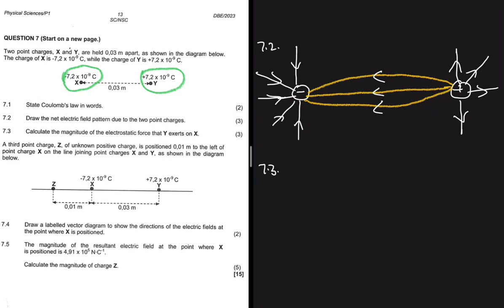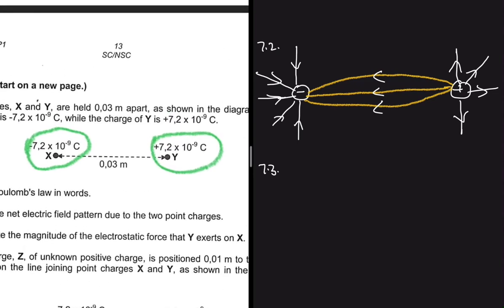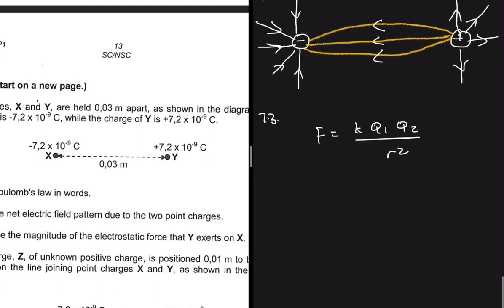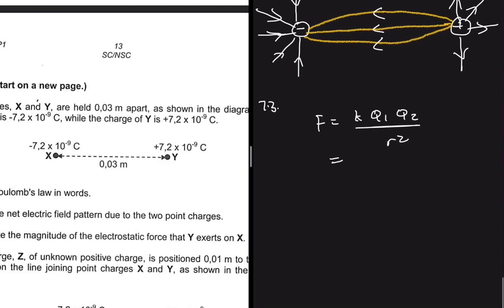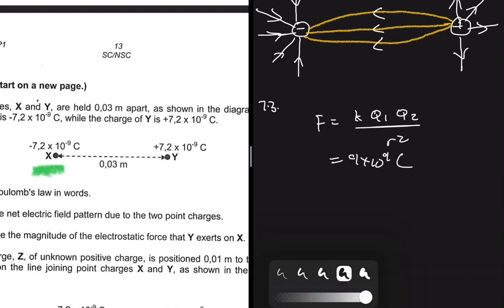For 7.3, we need to calculate the magnitude of the electrostatic force that y exerts on x. So we have y and x right there. The formula is F = kq₁q₂ / r². The value of k is a constant: 9 × 10⁹. For q₁, we take x — when you substitute, you don't put the negative sign, just the magnitude: 7.2 × 10⁻⁹.